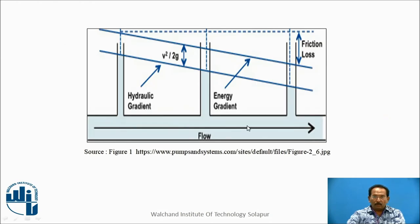Here you can observe the frictional loss. This is the topmost level, and when the fluid is traveling from this point to this point, there are some losses that occur — this is the friction loss.